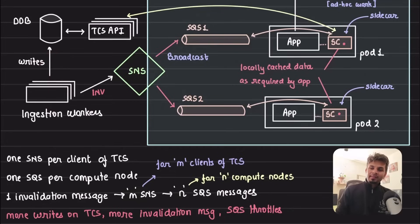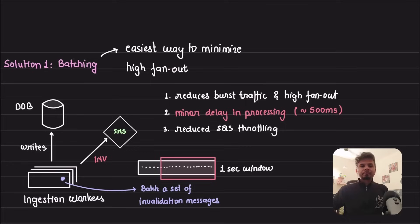It's unnecessary cost because SQS bills you per message. Imagine the time when writes are more - if the writes are more, the number of invalidation messages are more. Every invalidation message is sent M cross N times. During high write throughput or high write load, your SQS starts to throttle - account level throttling. That's the problem. So lots of problems, let's find a solution.